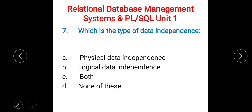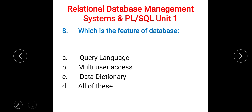Next: which are the types of data independence? A) physical data independence, B) logical data independence, C) both, D) none of these. The right answer is C) both — physical and logical data independence.